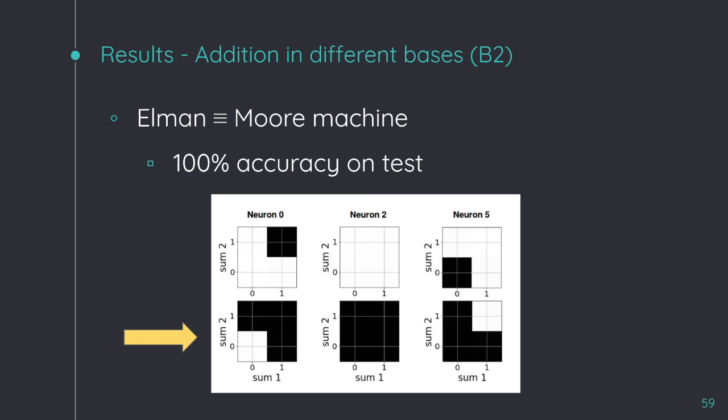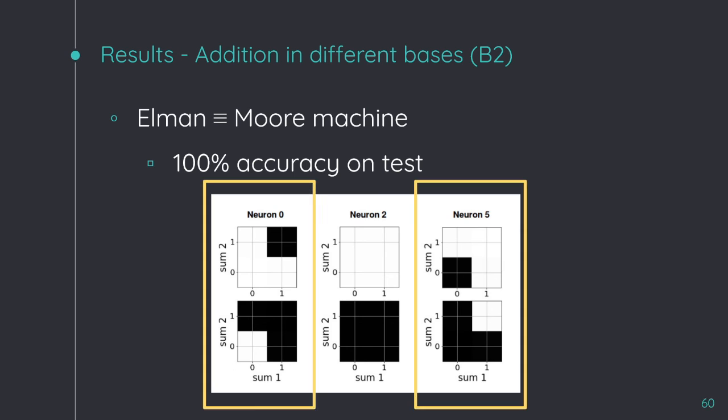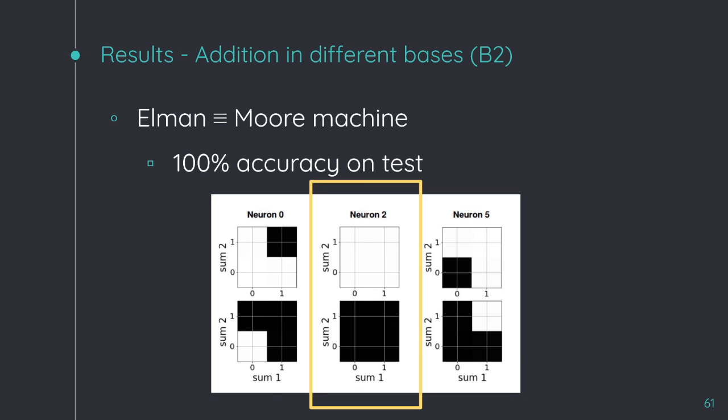Look how the neurons 0 and 5 are combining their activation to give the answer, while the neuron 2 is keeping the carry. Whenever there is a carry, the activation of the neuron 2 is 1, while when there is not, its activation is minus 1.